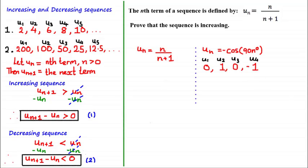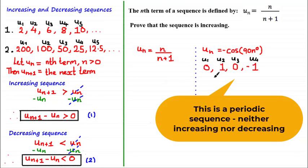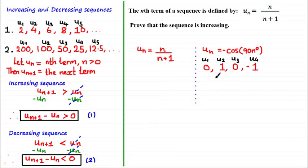To explain why, consider the sequence u sub n equals negative cosine of 90n degrees. The first four terms are 0, 1, 0, and negative 1. If we only look at n equals 1 and n equals 2 we get 0 and 1, and it looks like the next term is greater — but look what happens after: the next term is less than the previous term. Choosing specific terms doesn't prove the sequence is increasing or decreasing for all values of n, so the most suitable approach is an algebraic proof.